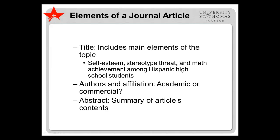Next, look at the authors and their affiliation. Typically, the authors will be people associated with academic institutions, universities, and the like. However, sometimes authors are independent or work for a company or organization. Although researchers in academic institutions are certainly not immune to biases, a researcher for a commercial business, such as a drug company or a test publisher, may have a potential conflict of interest that needs to be examined. Keep this in mind when later evaluating the source of the information.